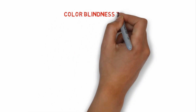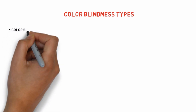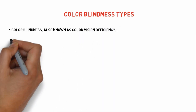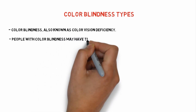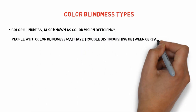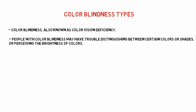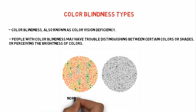Hi, welcome to another episode of Medicine Simplified. Today we will know about types of color blindness. Color blindness is also known as color vision deficiency. People with color blindness may have trouble distinguishing between certain colors or shades, or perceiving the brightness of colors. Here is an image where a normal patient with normal vision can see multiple colors, and here is a color blind patient where he can see only gray scales.